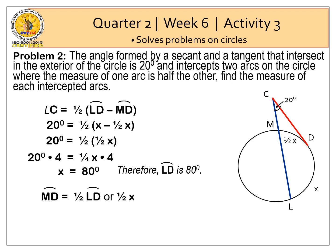Let's now find the second intercepted arcs. Arc MD, which is equal to 1 half arc LD or 1 half X. Since LD is equal to 80 degrees, arc MD therefore is 40 degrees.